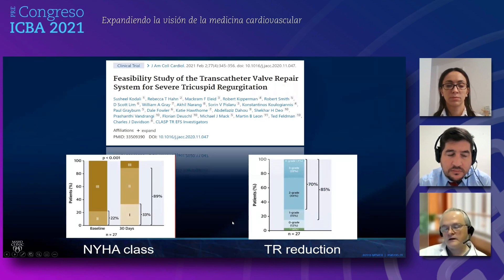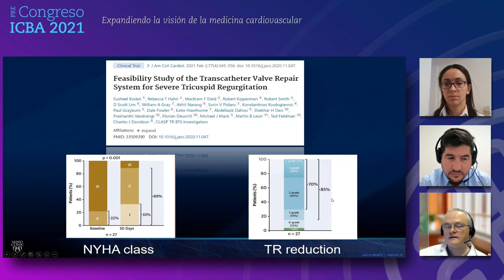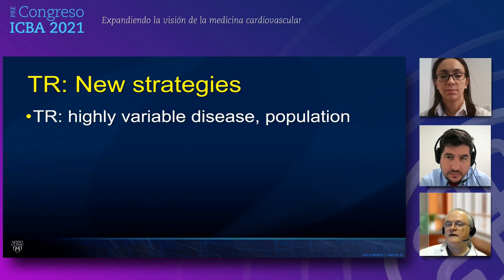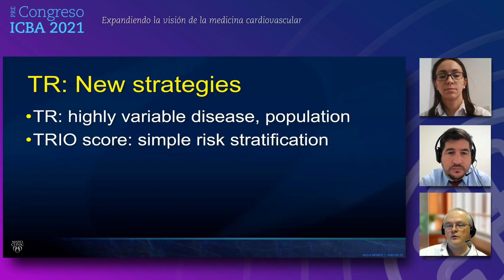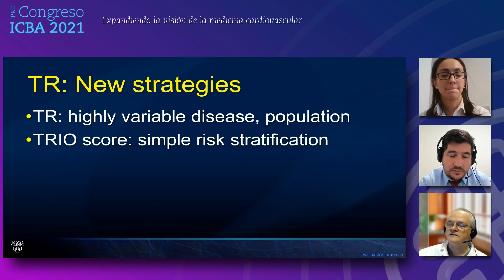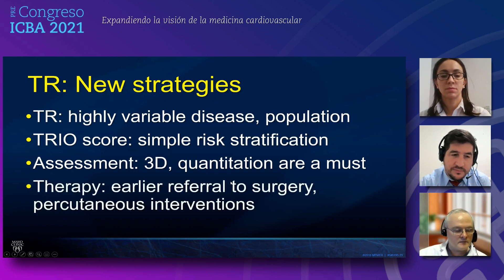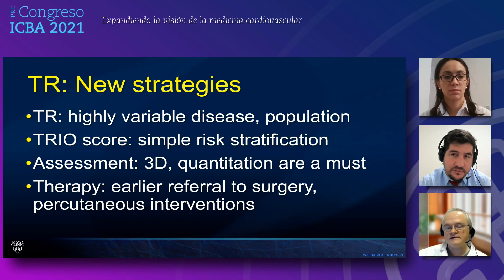The report from the early feasibility study included just 27 patients, but in general New York Heart Association class improved at one month, and we had at least one grade reduction in regurgitation severity in 85% of patients. In summary, tricuspid regurgitation is a highly variable disease. We propose a new risk score using simple clinical factors — the TRIO score — to classify patients as low, intermediate, or high risk. Three-dimensional imaging is essential for assessment of tricuspid valve disease. And the bottom line is we need to refer patients earlier to intervention, whether surgical or percutaneous.